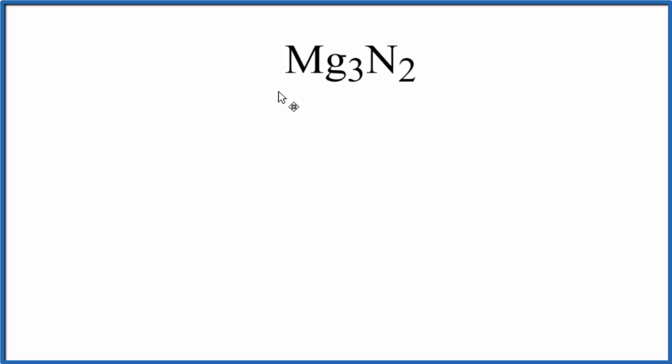In this video, we'll write the Lewis structure for Mg3N2, magnesium nitride. So the first thing we need to recognize is that magnesium is a metal, nitrogen is a non-metal. This is going to be an ionic compound, so the electrons will be transferred from the metal to the non-metal.